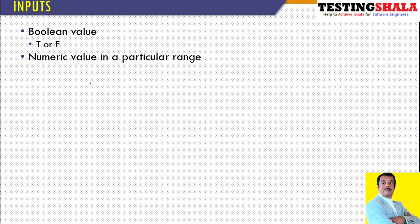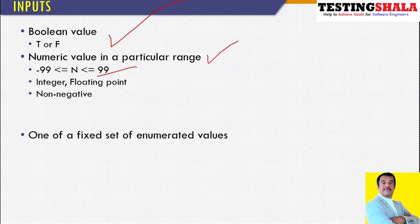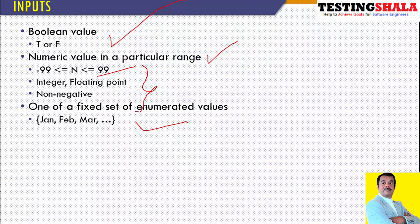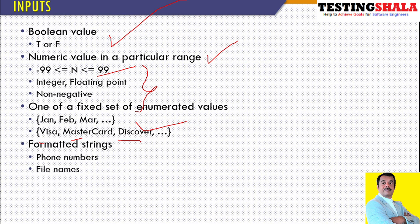Inputs to a given test case can take various values. Boolean has only two values: zero or one, or true or false. Numeric values can be integer, floating point, or non-negative — anything in a particular range. Then there are fixed sets of enumerated values, like January, February, March — months of the year, or credit card types like Visa, Mastercard, or Discover.